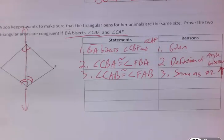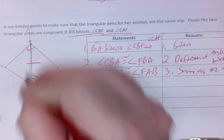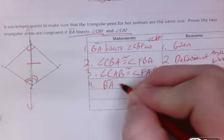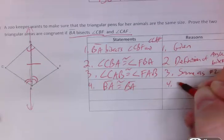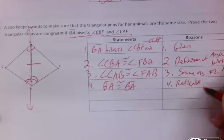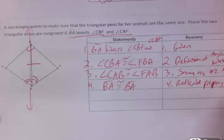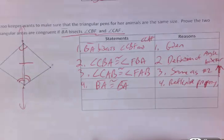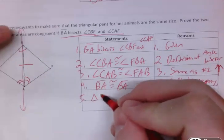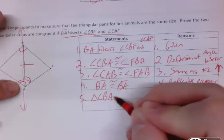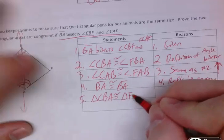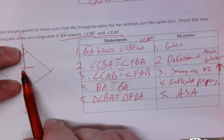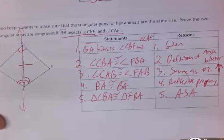And now we're just missing a side. Well, they share a side. You can say segment BA is congruent to segment BA by the reflexive property. And there's your last piece of the puzzle. Two angles and the side between them, two angles and the side between them. So triangle CBA is congruent to triangle FBA by angle-side-angle. Two angles and the side between them, two angles and the side between them. That is angle-side-angle.